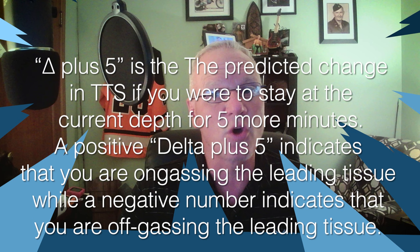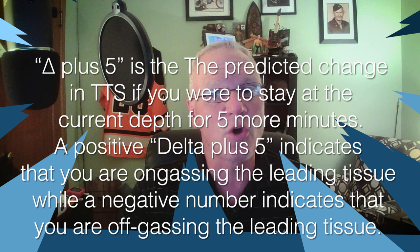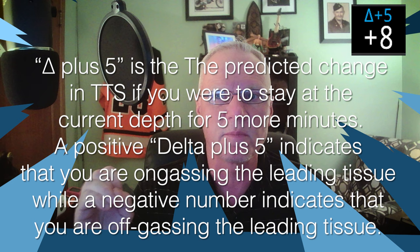The predicted change in total time to surface if you were to stay at the current depth for five more minutes — a positive Delta Plus Five indicates that you're on-gassing the leading tissue, while a negative number indicates that you're off-gassing the leading tissue. It gets a little complicated, but this is a fairly simple concept that we've been using in the technical diving world for a long time.